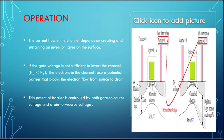Operation: The current flow in the channel depends upon creating and sustaining an inversion layer. If the gate voltage is not sufficient to invert the channel, when the gate voltage is less than threshold voltage, electrons in the channel face a potential barrier that blocks the electron flow from source to drain. This potential barrier is controlled by both gate-to-source voltage and drain-to-source voltage, as you can see in the picture.